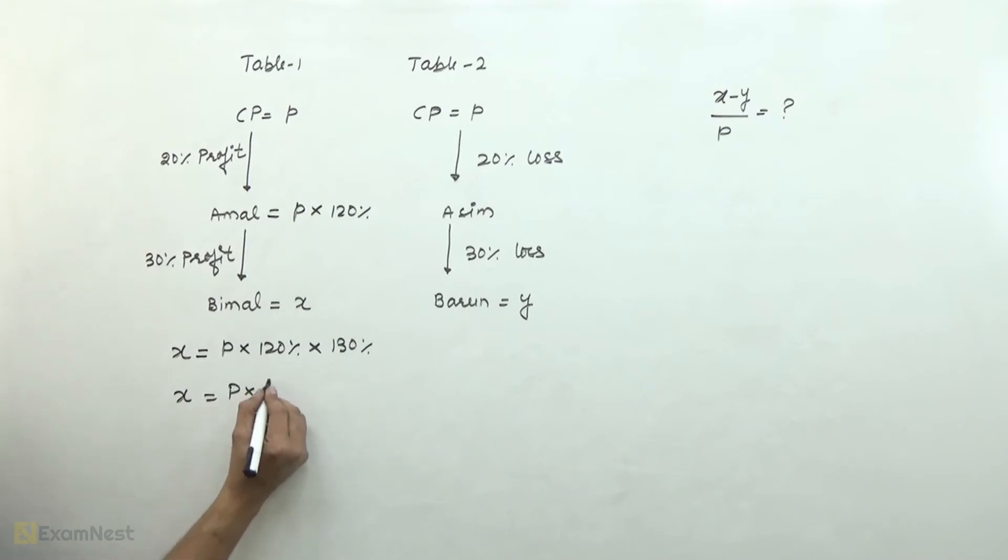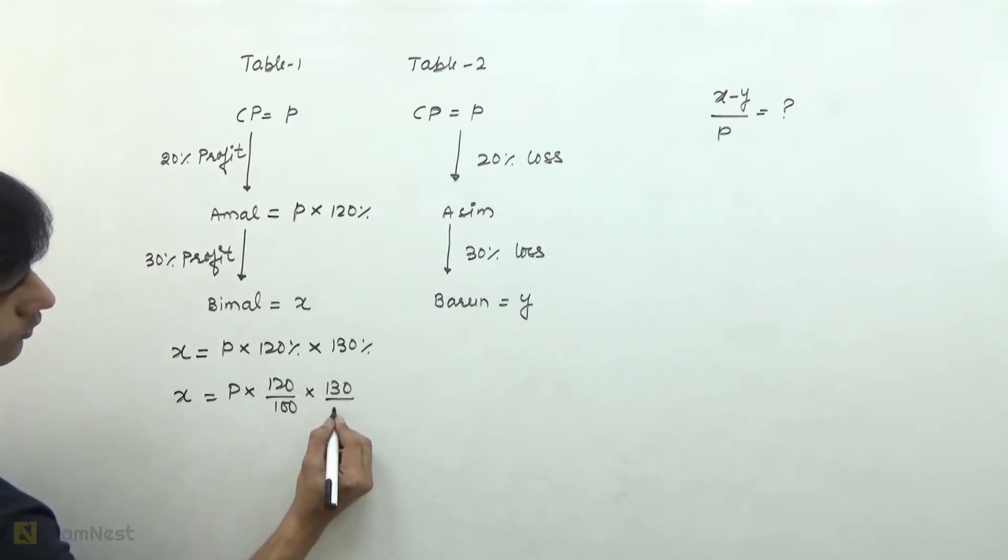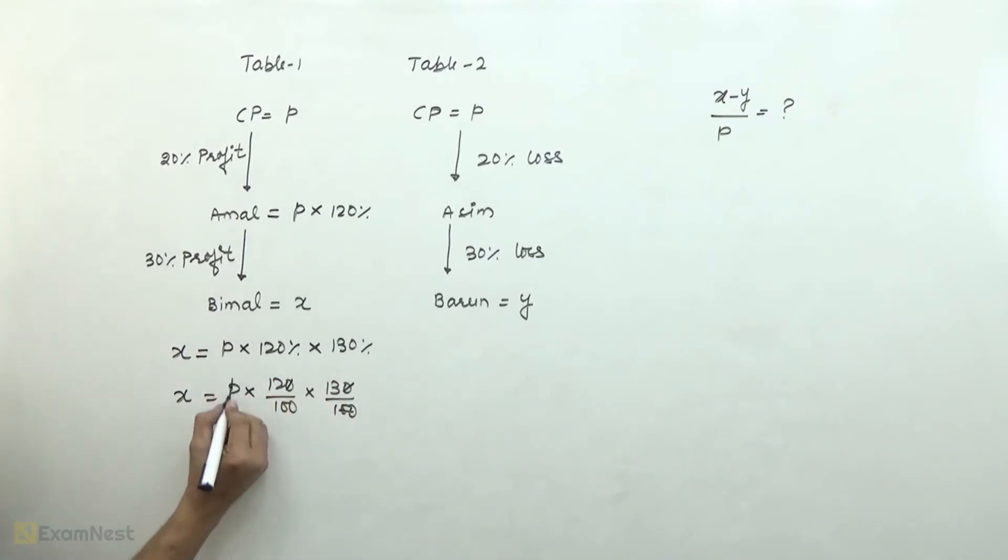We will solve this. So this is 120 over 100 into 130 over 100. We can cancel two zeros. We get 156 over 100. x equals 1.56 times P.